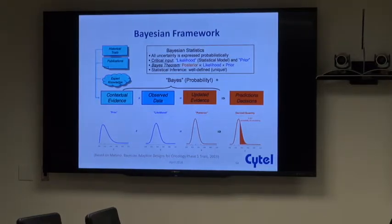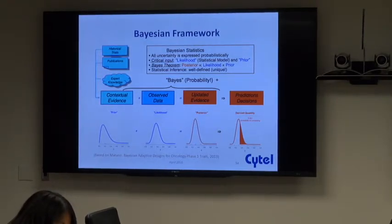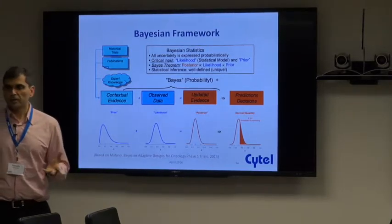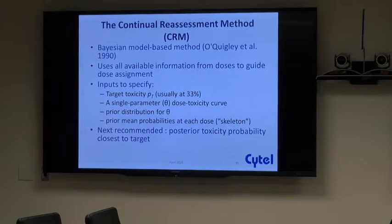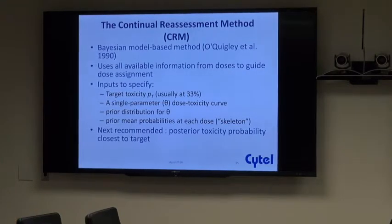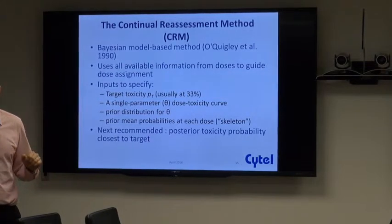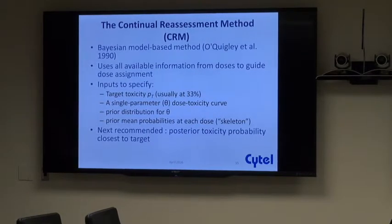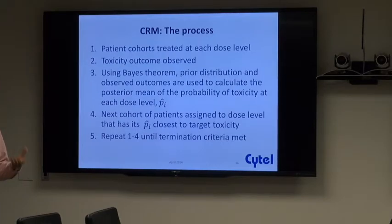The methods we'll focus on all utilize this approach. It's a natural way of thinking: you have some a priori view about something, then evidence comes your way and updates your view. With the continual reassessment method, you still have a target toxicity — 30 or 33 percent — but you also have a single-parameter model, a single-parameter curve describing the dose-toxicity relationship. This is an a priori view that gets continuously updated.